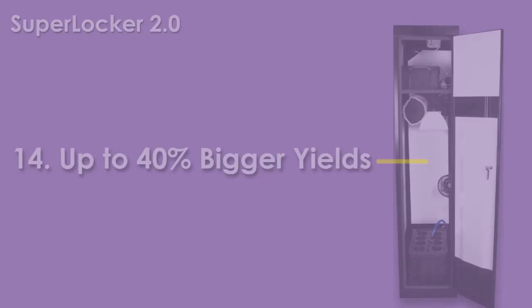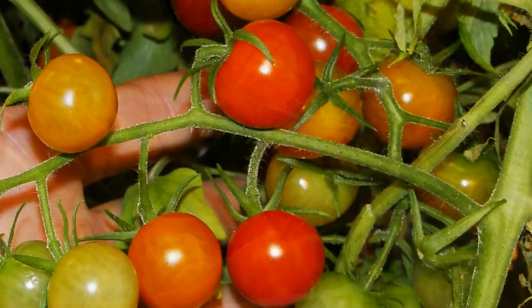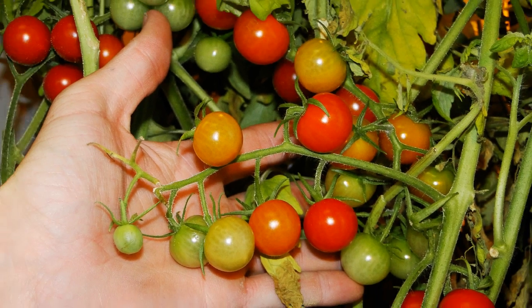Super Closets are the only product on the market to have a net trellis system. This allows you to grow more in your super locker and increase your yield by up to 40%.